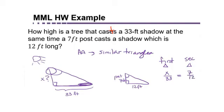So we would cross multiply to solve for x and we get 12x equals, let's see what is 33 times 7? 231.